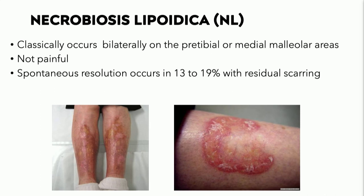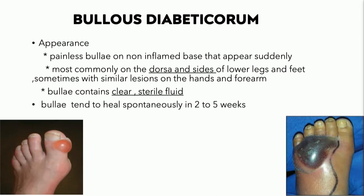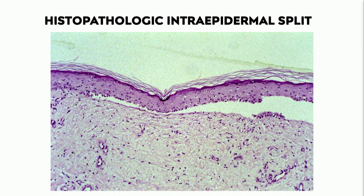Bullous diabeticorum occurs uncommonly in about 0.5% of diabetics, but it is quite distinct — it can sometimes look like bullous pemphigoid, particularly since it tends to occur in older diabetics. It is common on the dorsal aspects of the feet, anterior tibial regions, and lateral aspects of the feet, and less commonly presents as a tense hemorrhagic bullae. Histopathologically it is cell-poor, almost like porphyria cutanea tarda, with an intraepithelial split and a pseudo-tombstoning phenomenon similar to pemphigus vulgaris.